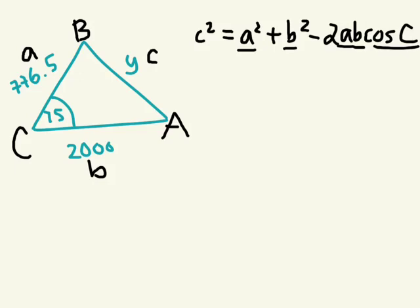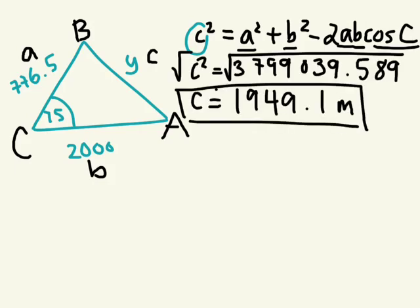So we're going to use the cosine law to solve for side length c. We know a, b, and we know the angle. All we need to find for this question is c. So let's plug it in, simplify, and isolate. When we simplify it, round it to one decimal place. We found that c, which is the value of y, is approximately 1949.1 meters.